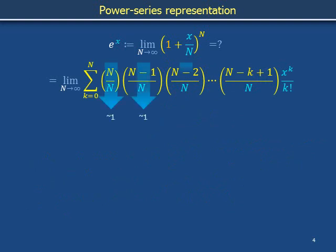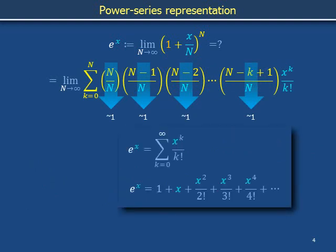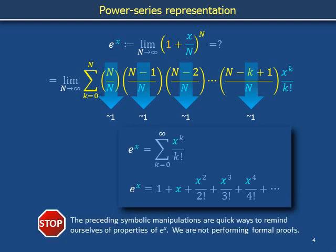As n becomes arbitrarily large, the various factors enclosed in parentheses become arbitrarily close to 1. The sum also consists of more and more terms, so this limiting process points us to the sum from k equals 0 to infinity of x to the k over k factorial, which written out explicitly is 1 plus x plus x squared over 2 factorial, plus x cubed over 3 factorial, and so forth. This is the quantity e to the x. The preceding manipulations are quick ways to remind ourselves of the series expansion for e to the x starting from the idea of compound interest. We are not performing formal proofs.